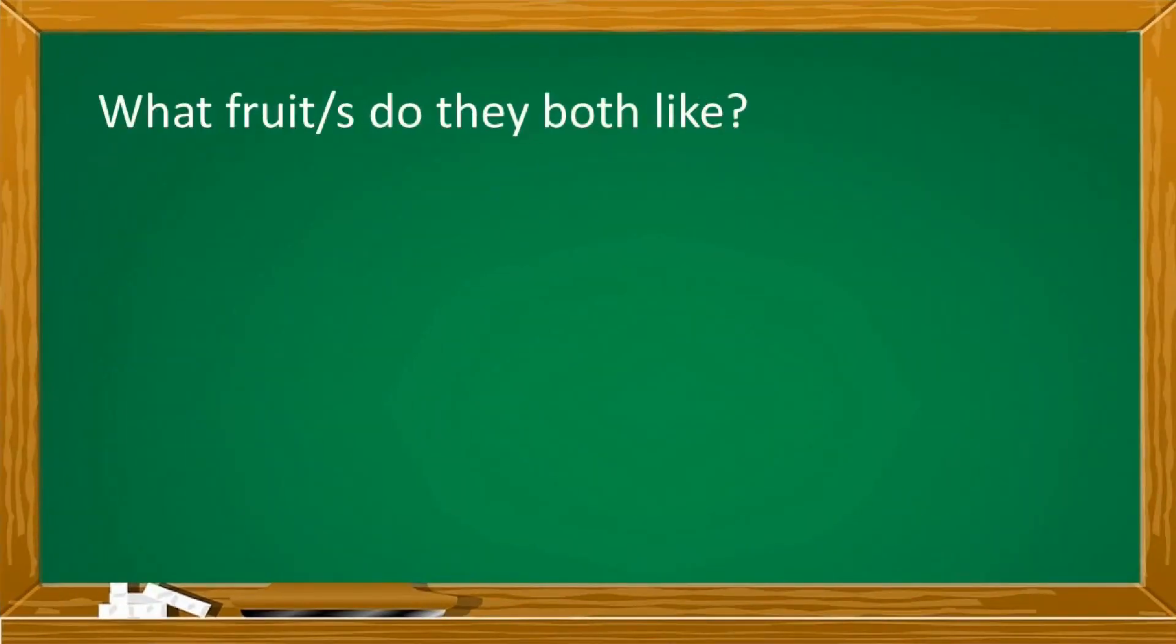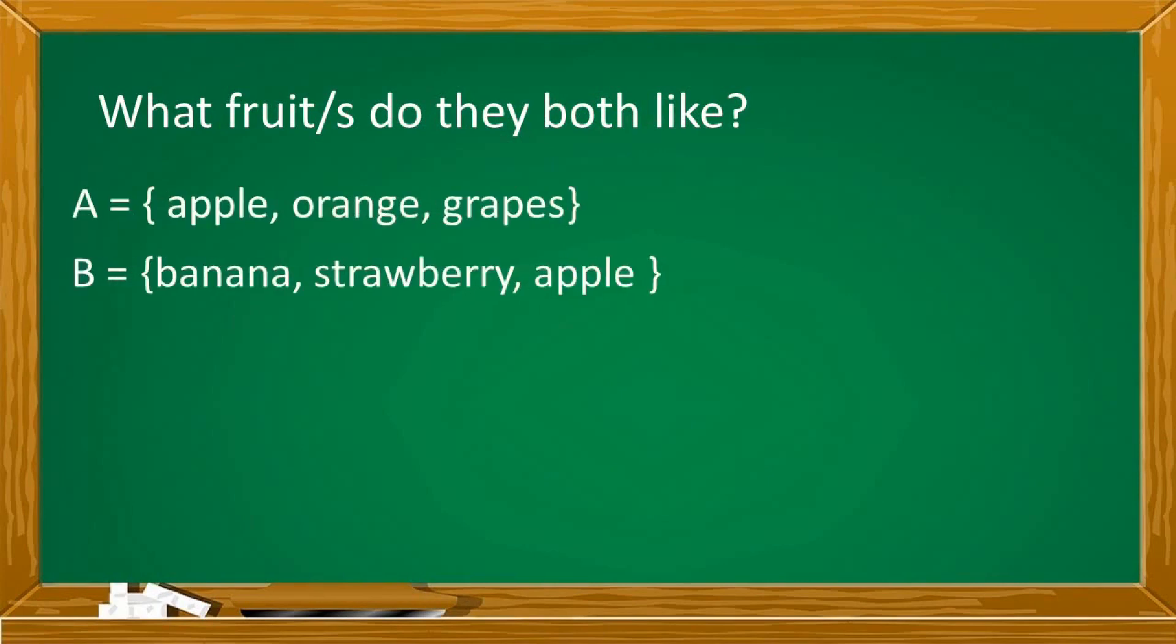Let us answer the first question. What fruit or fruits did they both like? Knowing the elements of set A and set B, where set A represents the favorite fruits of Regina and set B represents the favorite fruits of Lerna, as you can see, they both like apple.